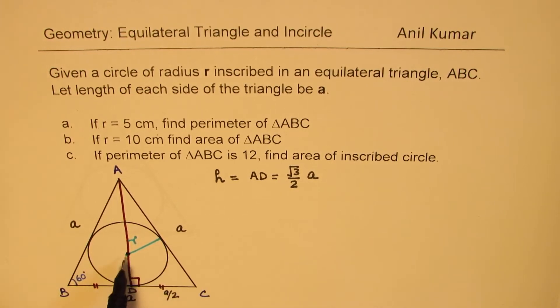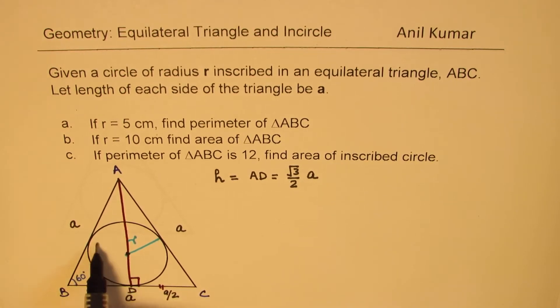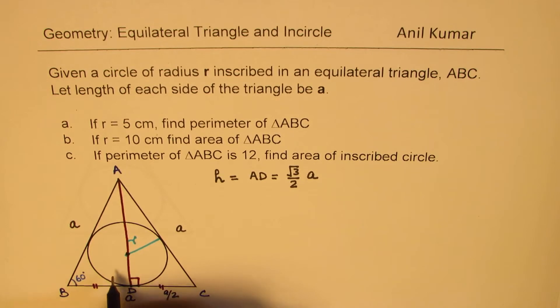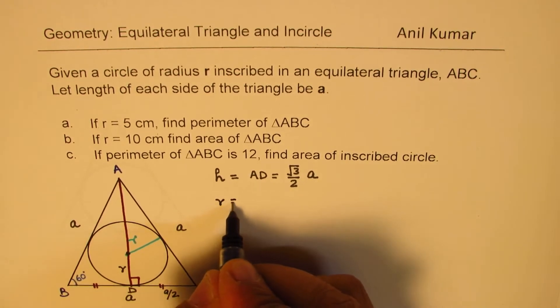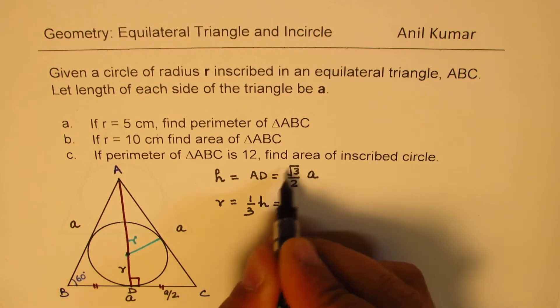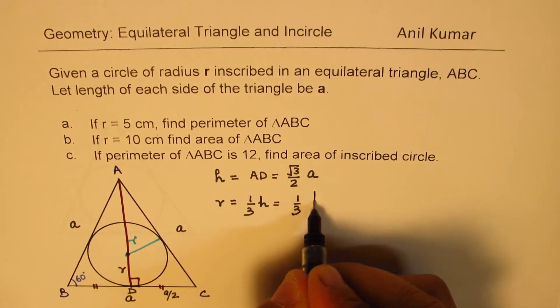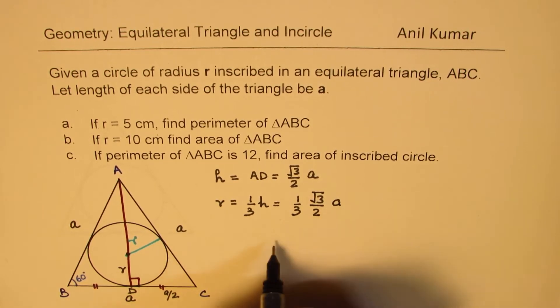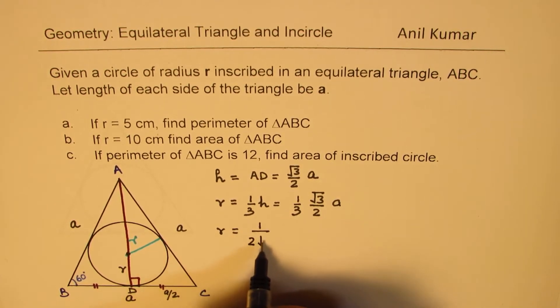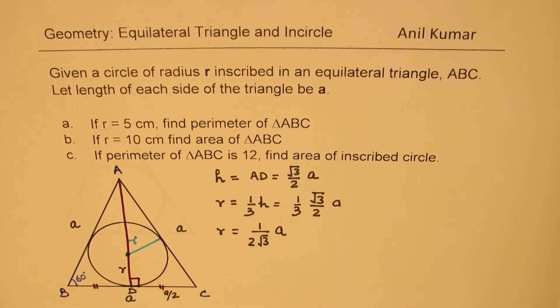Second, at this point, medians, angle bisectors, and perpendicular bisectors all intersect. The orthocenter, circumcenter, and centroid are the same in this case. The radius r equals one-third of the height, so r = (1/3)H = (1/3)(√3/2)a = a/(2√3). This is a very important formula.